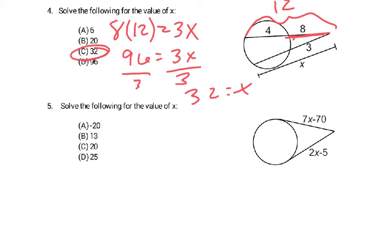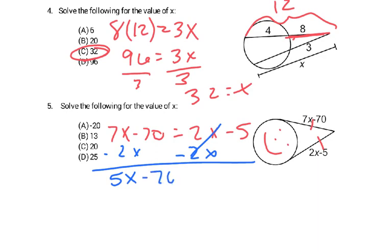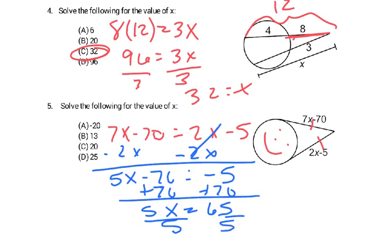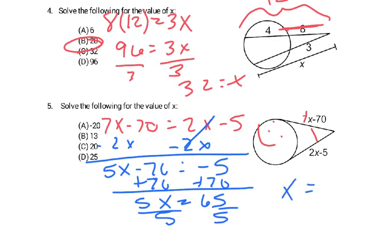And number 5. Remember the party hat. It's got to be congruent on both sides. So 7x minus 70 equal to 2x minus 5. And then you combine like terms. So we're going to subtract 2x on both sides. Add 70 to both sides. And then divide by 5. Which gives you x equals 13. Which would have been B. And that's your test.